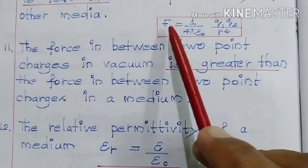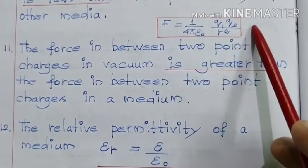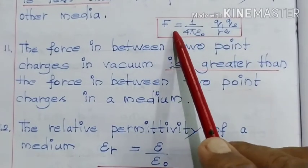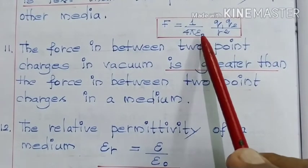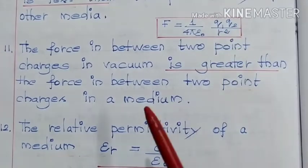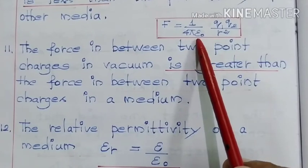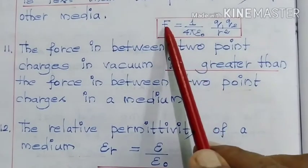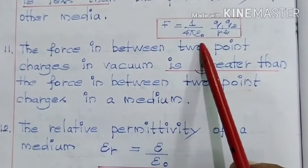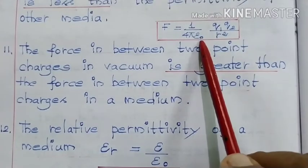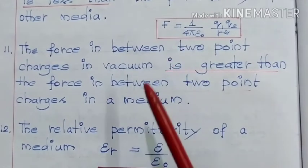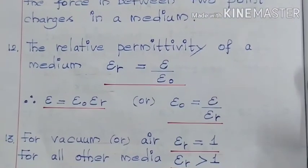Now, you have a look at this expression. This is the expression for Coulomb's law: F = (1/4πε₀)(q₁q₂/r²). Here, the force F and the permittivity of free space ε₀, they are inversely proportional. So, if one increases, the other one decreases.